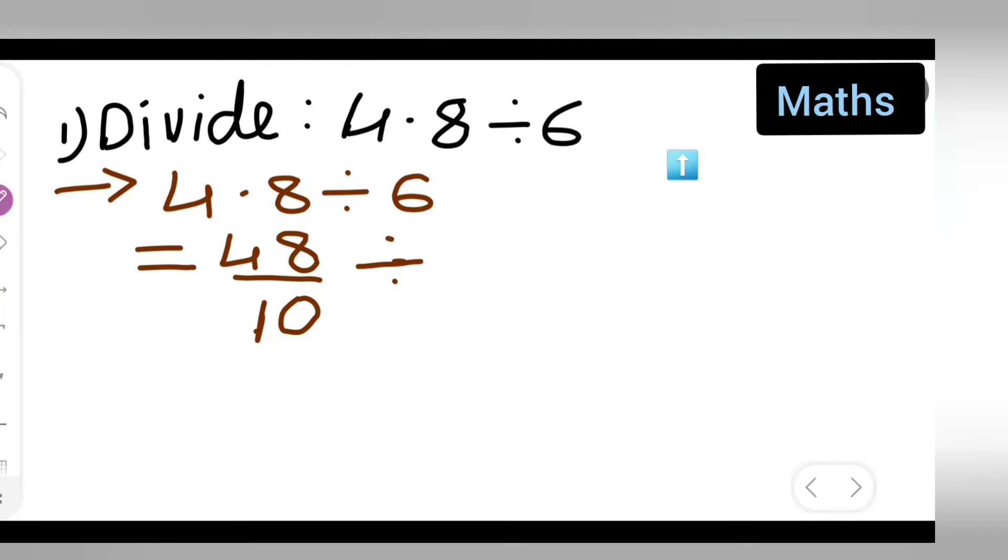48 upon 10 divide by 6. Now this is going to give you 48 upon 10, write it as it is, then you will have reciprocal of this 6. Write it over here, so multiply it by: